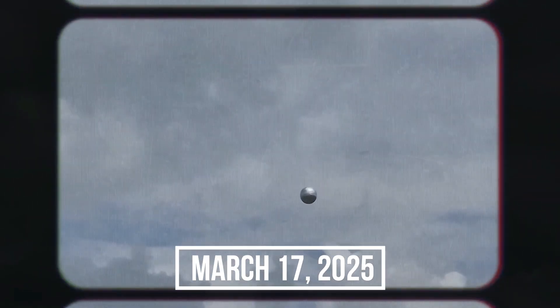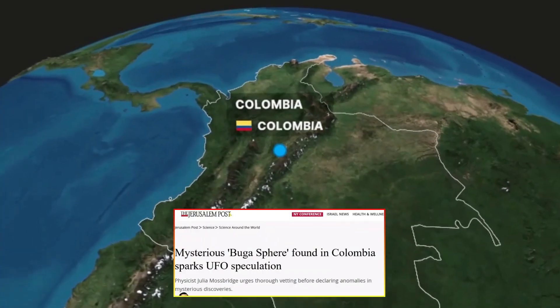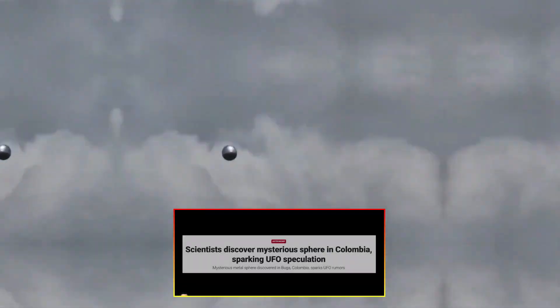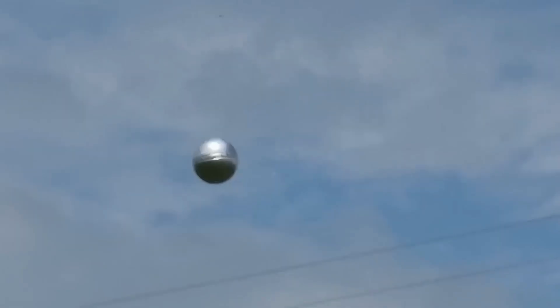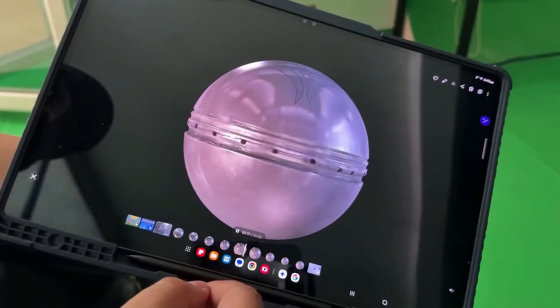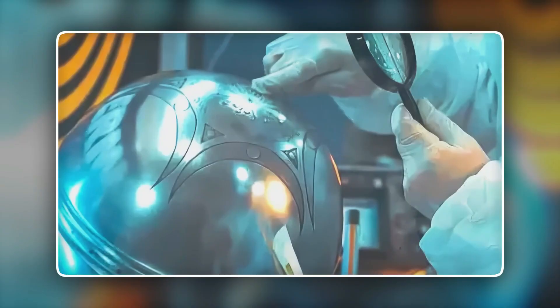March 17, 2025, Buga, Colombia, 2:47 p.m. A metallic sphere shreds power lines and buries itself in a farmer's field. By all logic, the impact should have scarred it. Dents, cracks, anything.